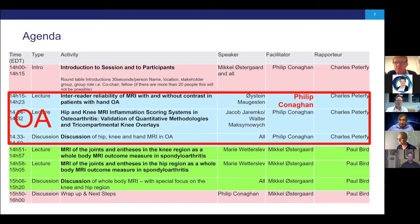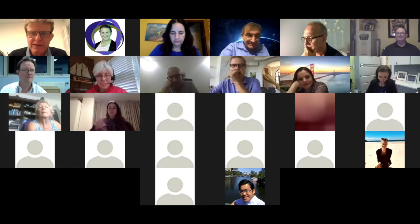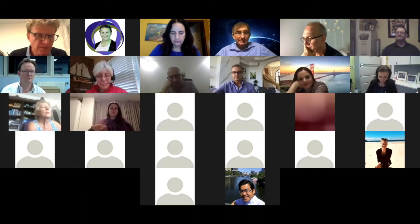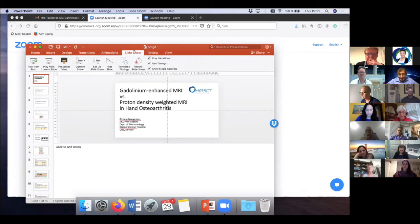Osteoarthritis is a really uncommon disease, and we've got lots of good therapies for it. So there is virtually no reason to want to do osteoarthritis research. One of the few therapeutic areas where we have less therapies than when I started in the field. It's really good to be in this zone.